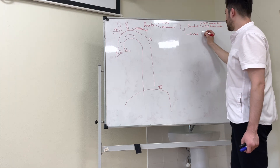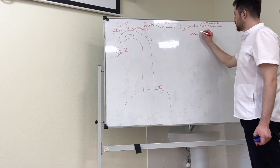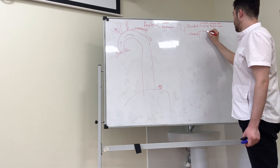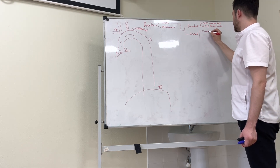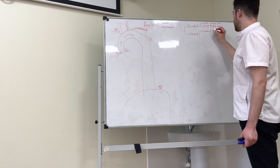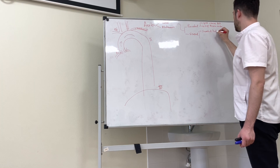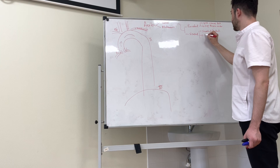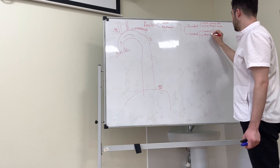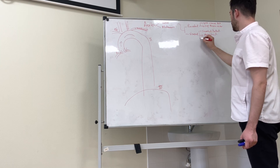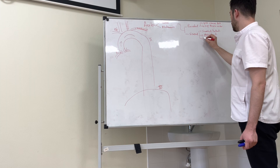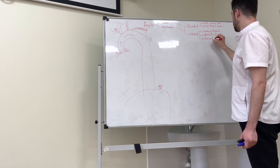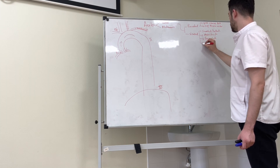Now the visceral branches: the first one is bronchial, then tracheal. The next one is mediastinal, then pericardial.